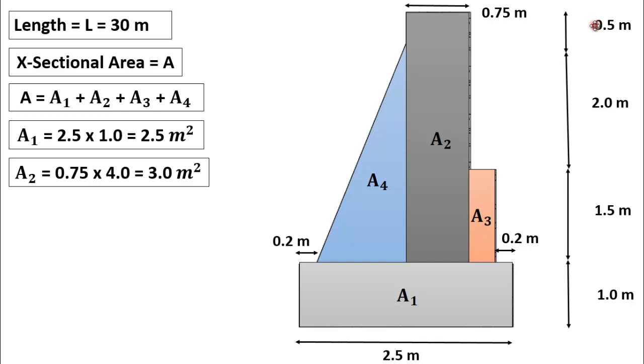Now we will find the area of third figure which is A3 and we know that the height of A3 is 1.5 and its width is 0.3 meter. So 0.3 multiplied by 1.5 is equal to 0.45 square meter.